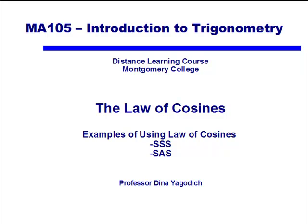In this video we're going to be using the law of cosines. We'll be using the law of cosines to solve two specific examples: one where we're given three sides of an oblique triangle, and one where we're given two sides and the angle in between the two sides.